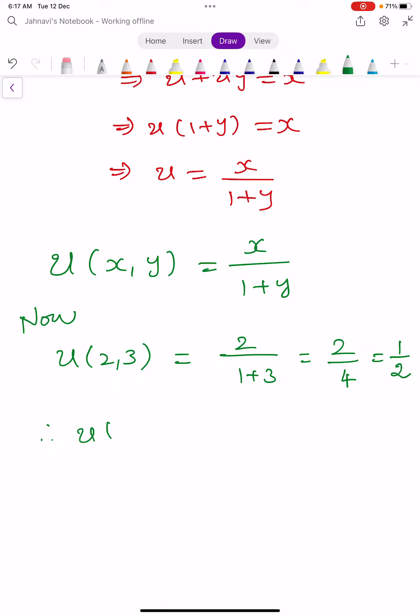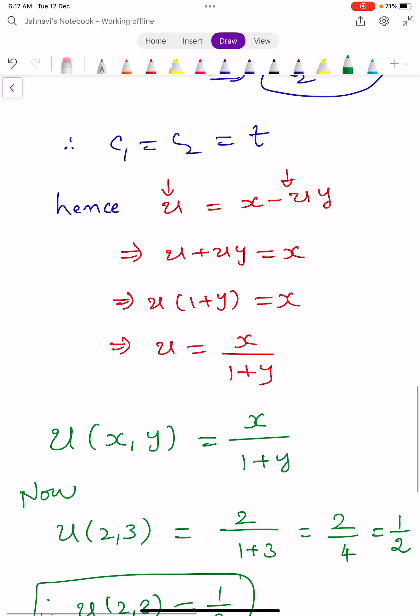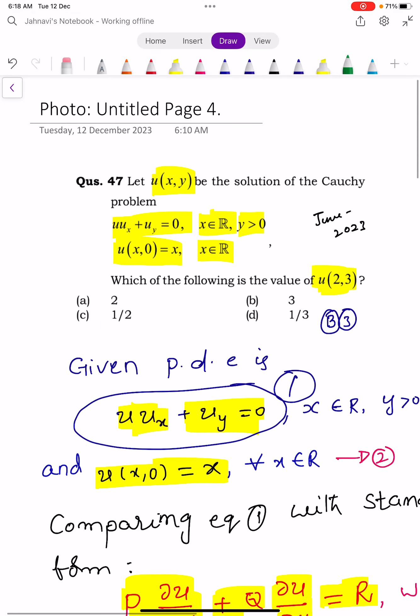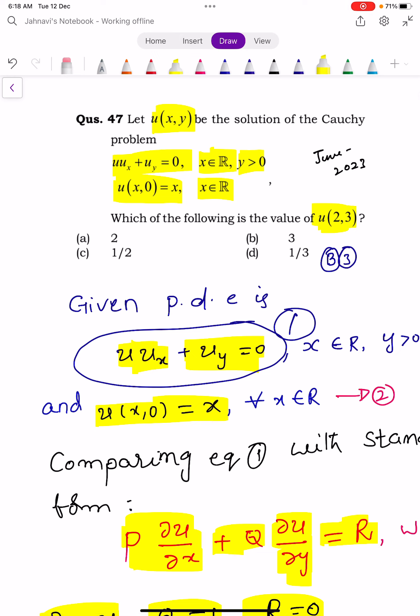Therefore, u(2,3) = 1/2. This is the required answer. I used the basic principles and basic method to solve this equation. The solution of the problem is 1/2. In the next video, we solve one more problem from the same question paper.